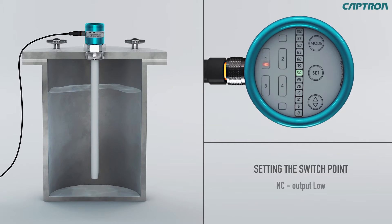With the option NC, the output is on low when the switch point is exceeded. Confirm your new setting with set. The probe then switches automatically to the setting of PNP2. Repeat the step as you perform for PNP1 and then for PNP3 and 4.